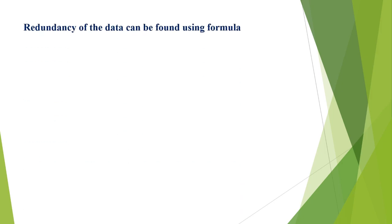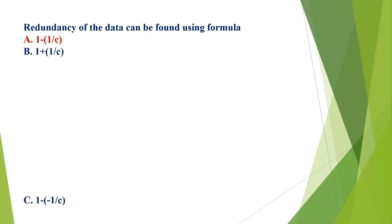Redundancy of the data can be found using the formula: A) 1 - (1/C), B) 1 + (1/C), C) 1 - (-1/C), D) 1/C. The correct option is A, 1 - (1/C).